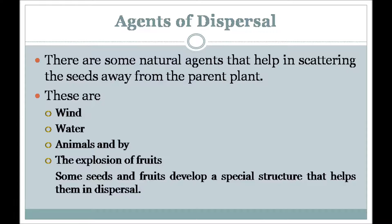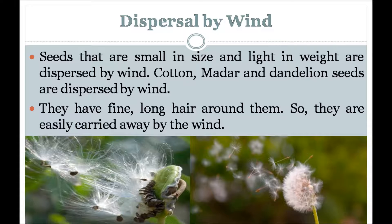Some seeds and fruits develop special structures that help them in dispersal. Dispersal by wind: Seeds that are small in size and light in weight are dispersed by wind. The seeds of the orchid are almost as fine as dust. Many seeds like dandelion have hairy growths which act as a parachute and carry the seed far away in the wind. The fruit of the sycamore has winged seeds and is dispersed by the wind.